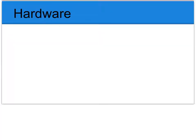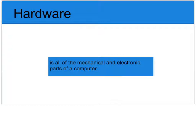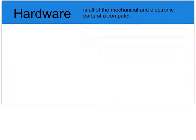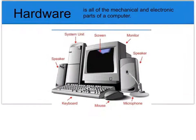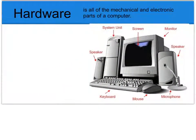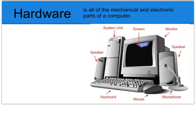To begin with, let's talk about hardware. Hardware is all of the mechanical and electronic parts of a computer. As you can see in this picture, hardware has many different components. In this picture, you have a system unit, which is your CPU. You have your screen or monitor.